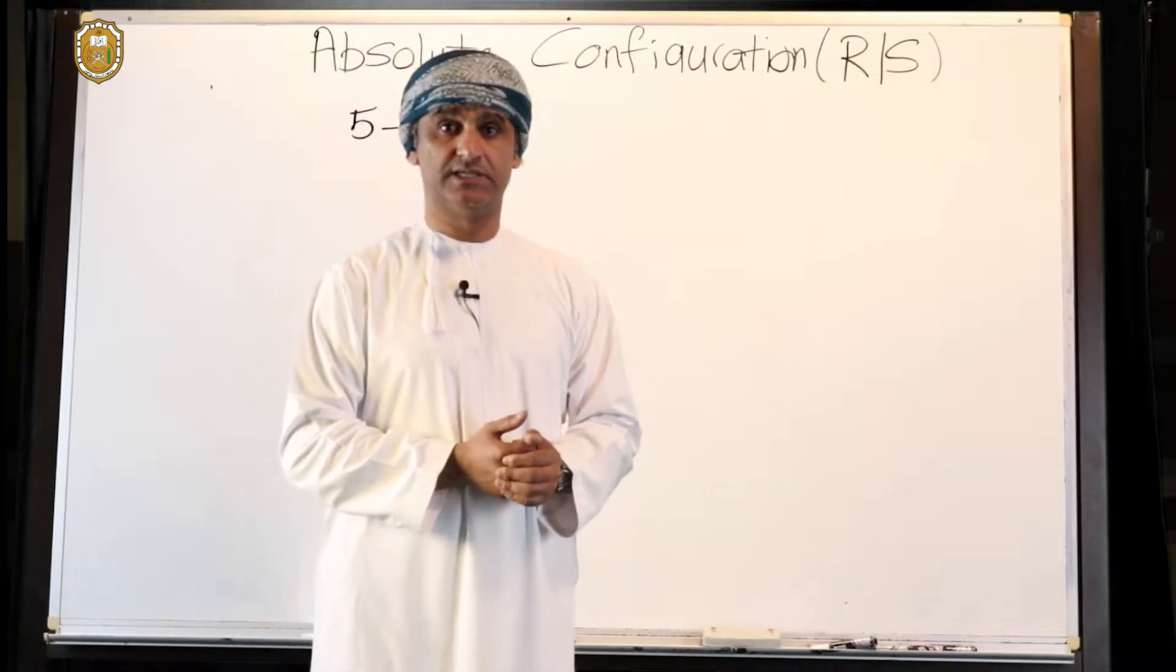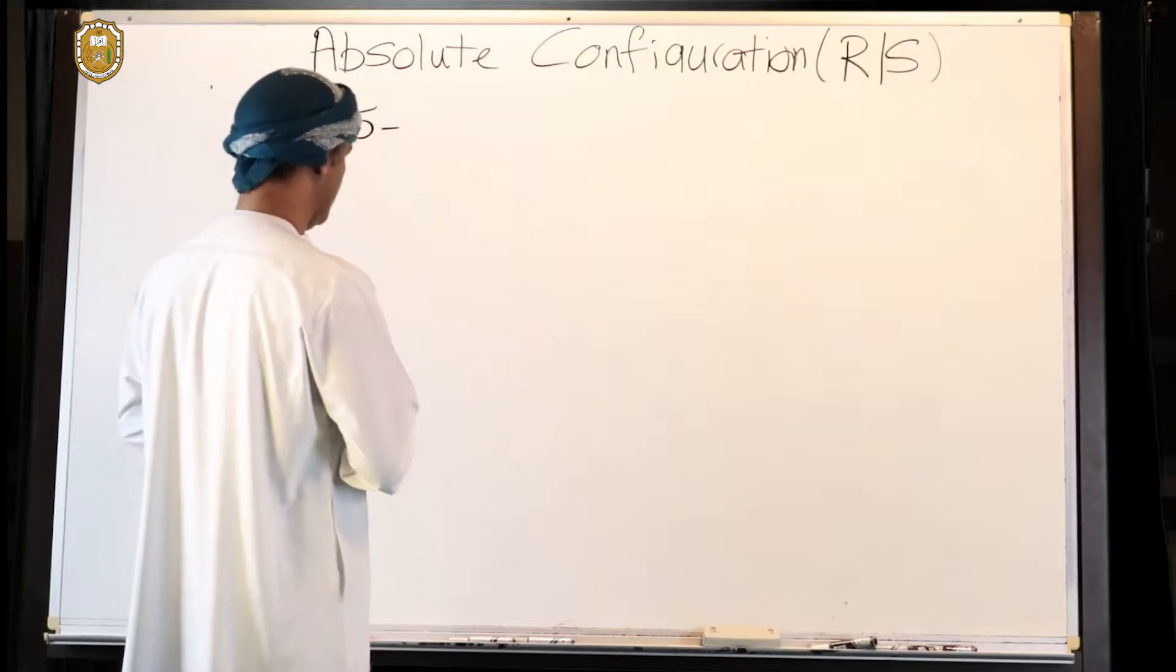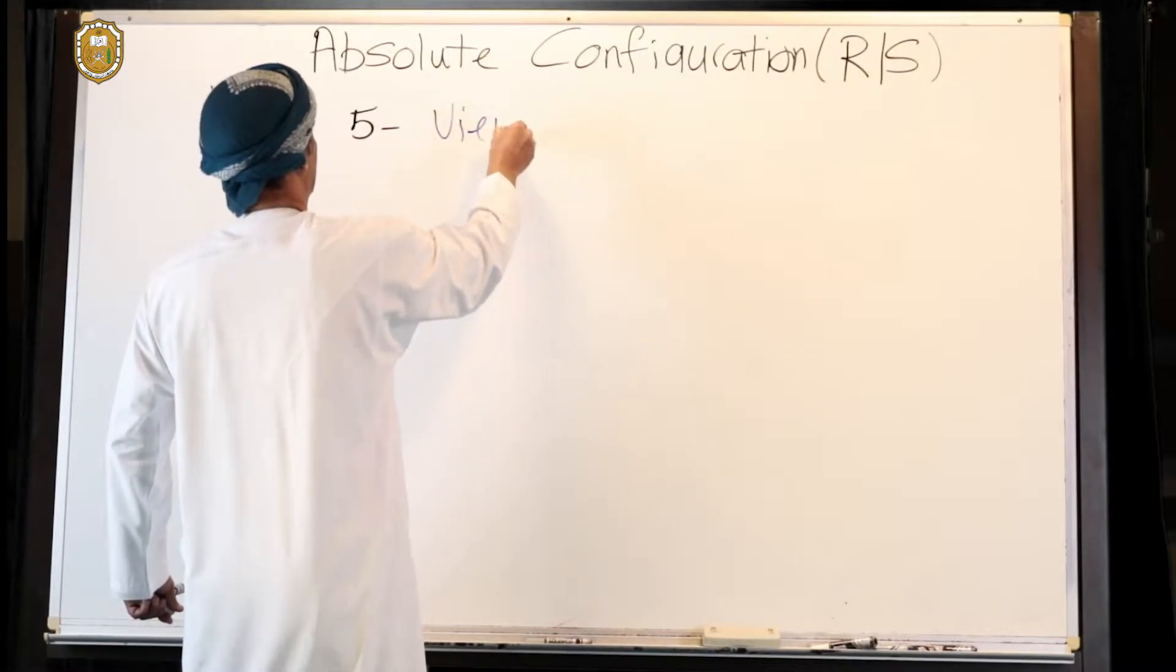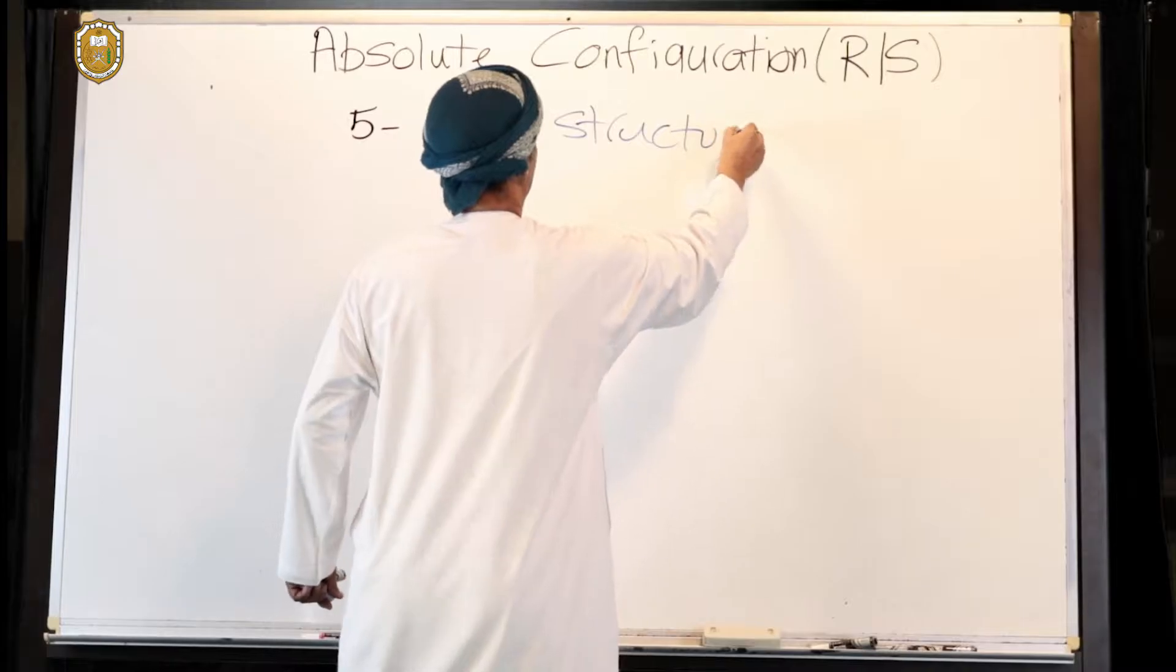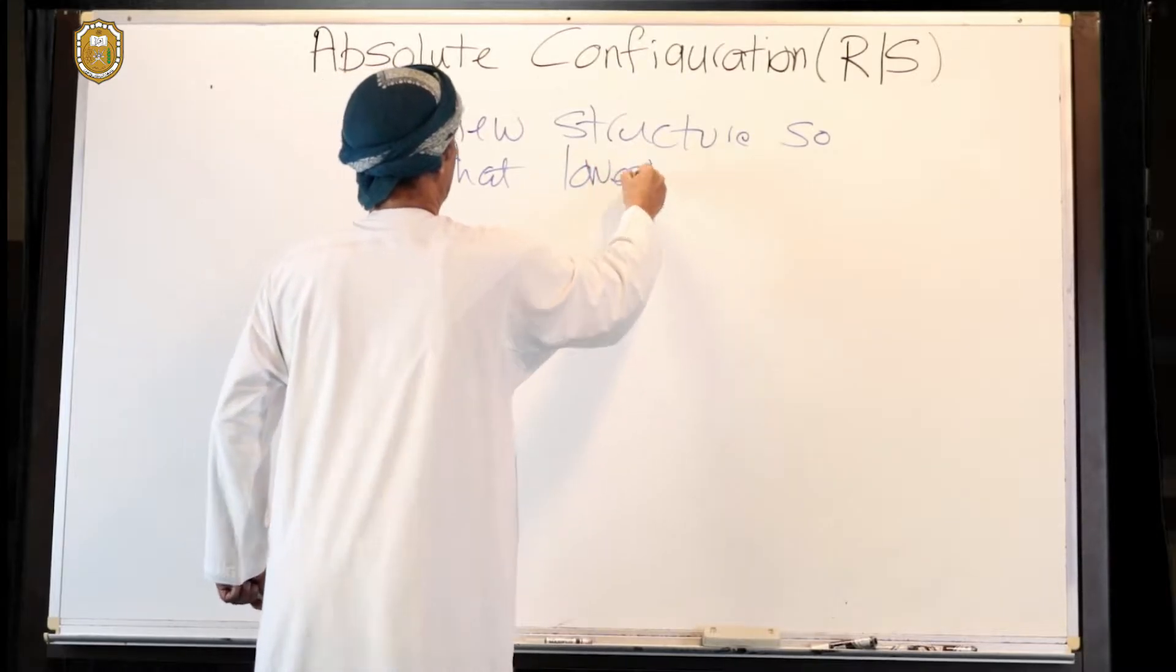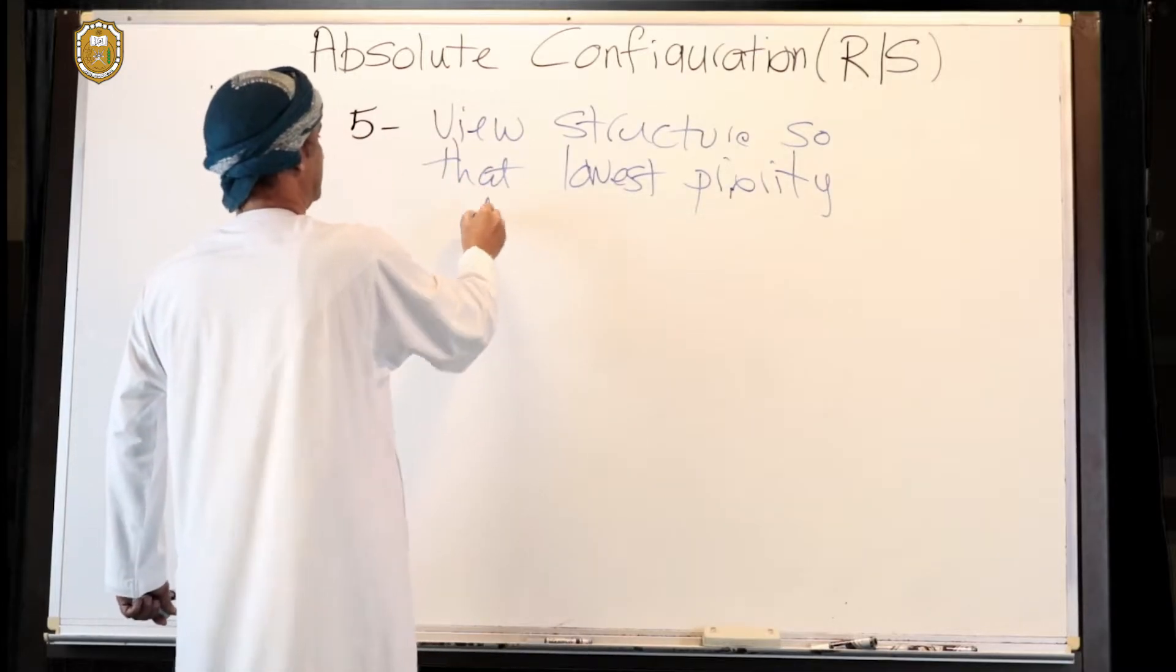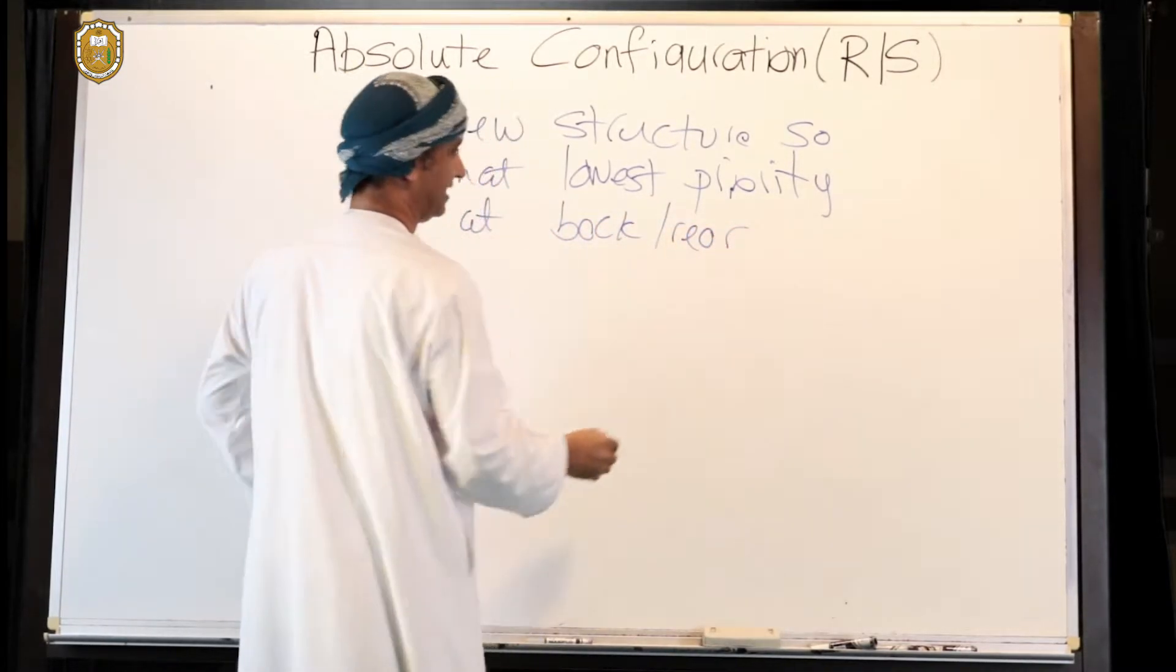So that's step number five: view the structure so that the lowest priority group is at the back, if you like, or at the rear. It's away from the viewer, something like that. Now, this may not be straightforward sometimes.